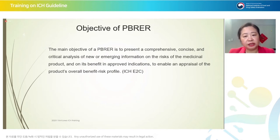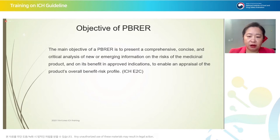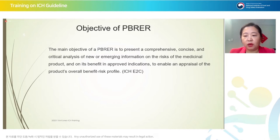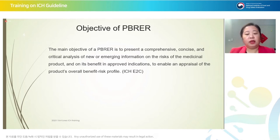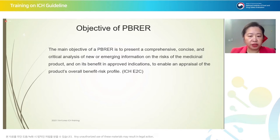What is the objective of PBIR? The ICH guideline states that the main objective is to present a comprehensive, concise, and critical analysis of new and emerging information on the risks of the medicinal product, and to enable an appraisal of the product's overall benefit-risk profile. The focus is benefit-risk profile. We collect new information during the reporting term, do analysis, and conclude whether there are any changes to the already known benefit-risk profile and whether the benefit-risk balance is still favorable.